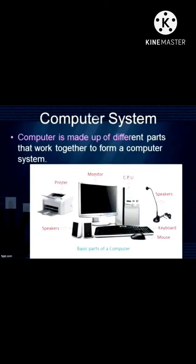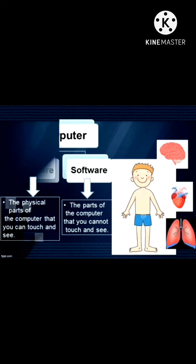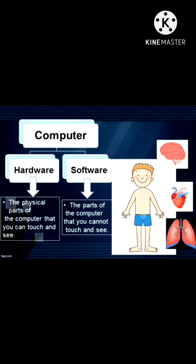Children, we have learned that a computer is made up of different parts that work together to form a computer system. The two basic parts of a computer system are hardware and software. The physical parts of the computer that you can touch and see are called hardware.